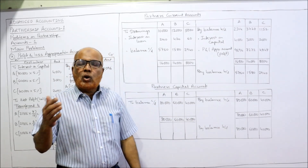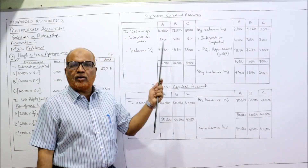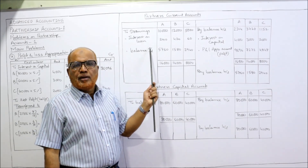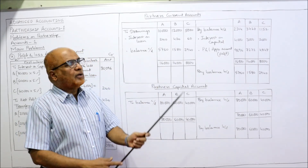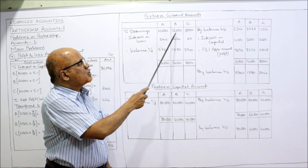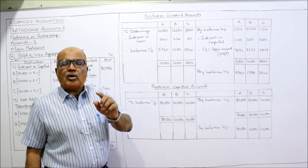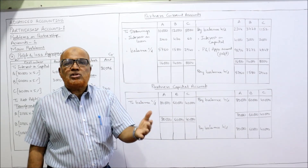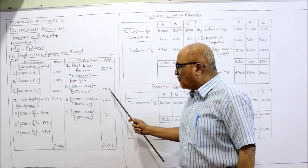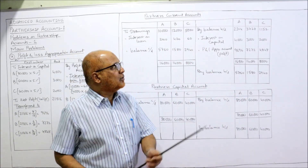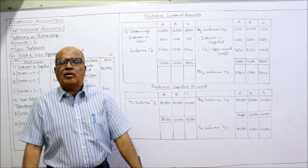Drawings and interest on loan are taken on the debit side because the partners have to pay to the firm. Drawings: A — 10,000, B — 12,000, C — 5,000. Interest on loan for excess drawings already calculated: A — 240, B — 420, C — 60. So debit entries are 240, 420, 60 respectively.